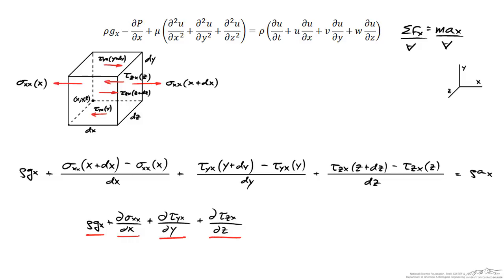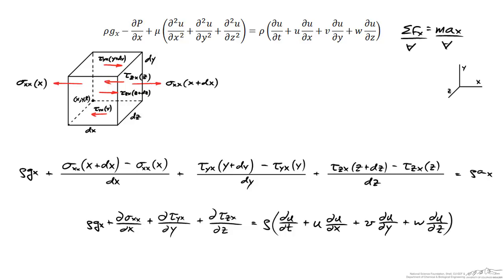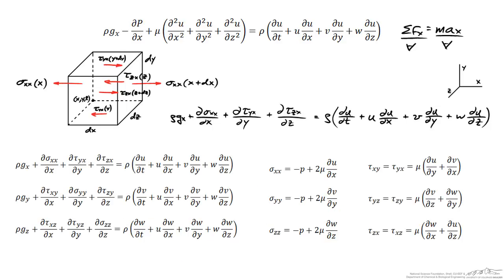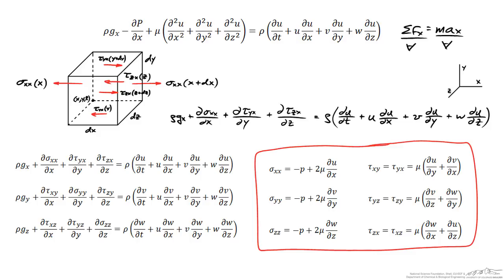These forces equal the density times the x-direction acceleration of the differential element. Expanding the acceleration into its local and convective components gives an expression on the right hand side. Performing the same analysis for y and z produces three equations known as the equations of motion for a fluid. To get from these to the Navier-Stokes equations, we need to relate the normal and shear stresses to the fluid viscosity and velocity profiles using the constitutive relations for a Newtonian fluid.